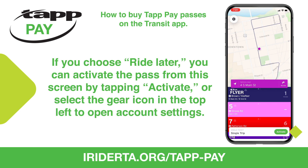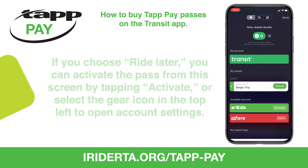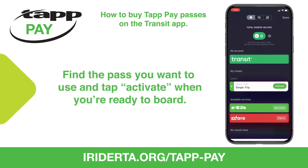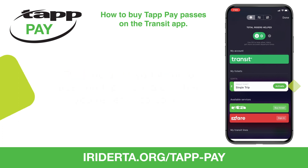If you choose Ride Later, you can find and activate your pass by tapping Activate on the bottom of the home screen, or by selecting the gear icon in the top left corner and opening your account settings. Find the pass you want to use and tap Activate when you're ready to board your bus. Remember, single trip passes are only valid for 10 minutes once activated.